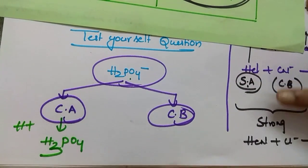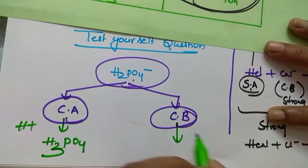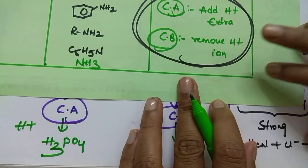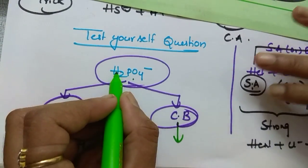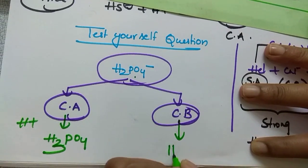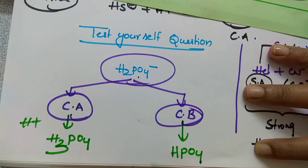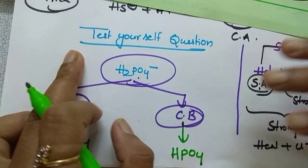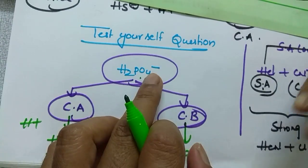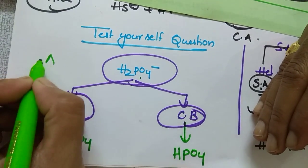Coming to the conjugate base, what I gave you the trick: remove H⁺. So remove one H⁺, then what do you get? If you remove one H you will be having HPO₄. After removing one positive charge, what does it get? It gets one negative charge.